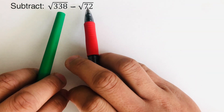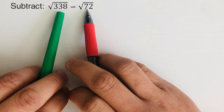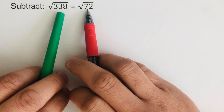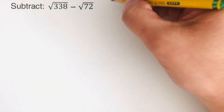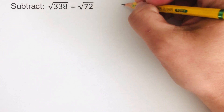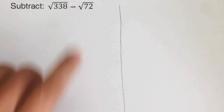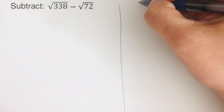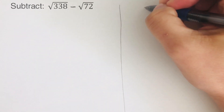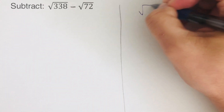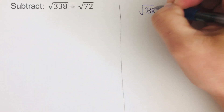Let's go over the next problem. Since the radicands of these two are not the same, we cannot subtract them. What we're going to do is simplify these radicals. We're going to start with the square root of 338.